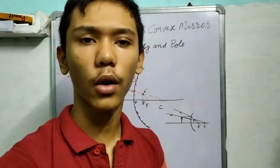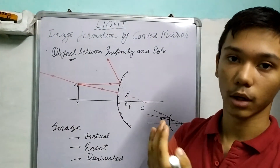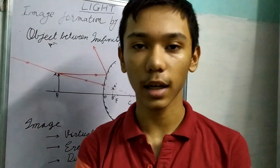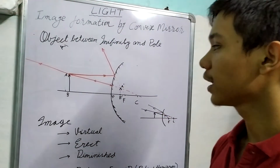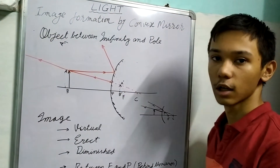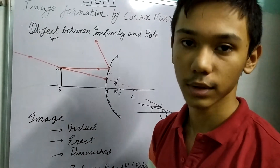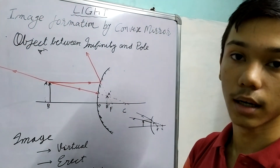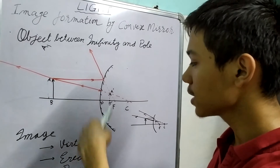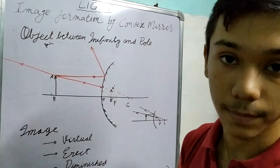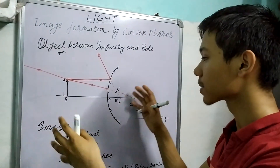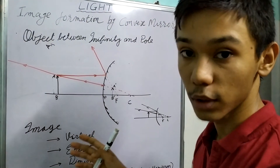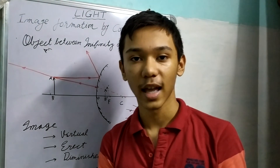In this video we saw how an object forms its image when a convex mirror is placed in front of it. In the next video, we will see how the image distance, object distance, and focal length relate to each other mathematically, so that given a mirror's radius of curvature or focal length you can calculate where the image forms. I hope you enjoyed this — thanks for watching.